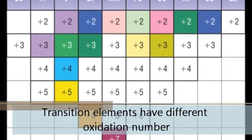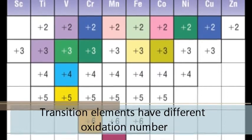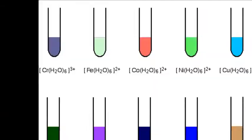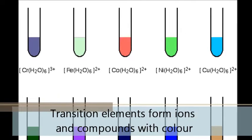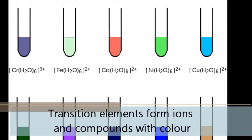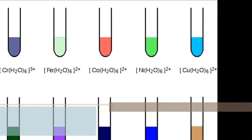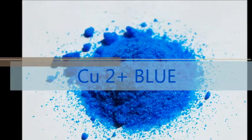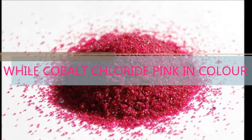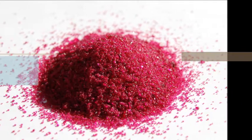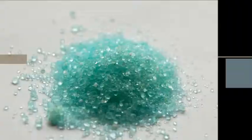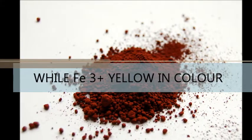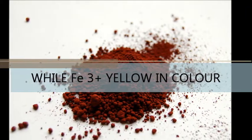Transition metal ion colors: Cu2+ is blue, while Cu+ is colorless. FeCl2 is pink in color. F2+ is green, while Fe3+ is yellow in color.